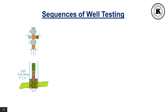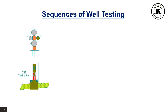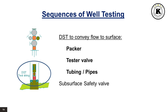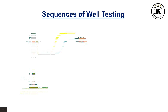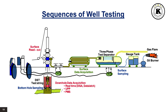Sequences of well testing. In order to produce oil at surface, the first step consists of perforating the reservoir using tubing-conveyed perforations, TCP. The next step consists of using the DST drill stem test equipment to convey the flow to surface. The main DST equipment includes the packer, the tester valve, the tubing or drill pipes, and eventually the subsurface safety valve. Finally, the surface well testing equipment is used to handle the flow at surface; it includes the flow head, the choke manifold, the burners, and others. This picture shows the complete setup of a well testing package from bottom hole to surface.